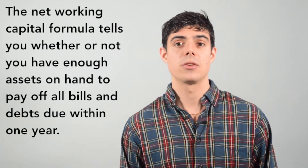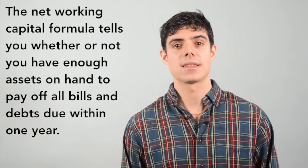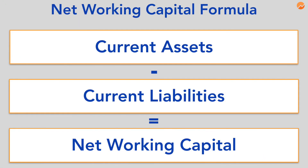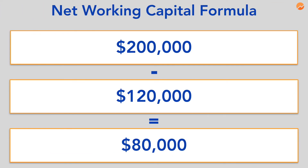Lastly, let's talk about net working capital. The net working capital formula tells you whether you have enough assets on hand to pay off all bills and debts due within one year. If you have a positive amount of net working capital, you have excess cash you can use toward day-to-day expenses. To calculate it, simply subtract your current liabilities from your current assets. For ABC Business, this means they have $80,000 on hand to pay off all their bills and debts. For more information, check out our YouTube video on net working capital.